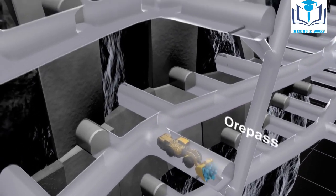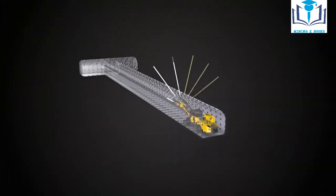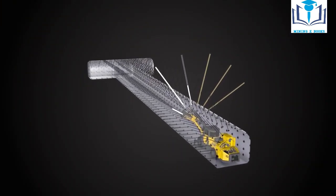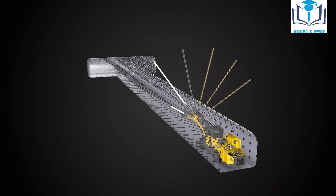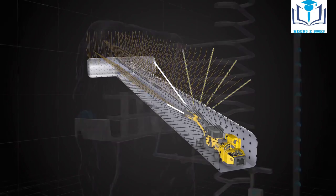Before it is time to excavate the secondary stopes, cable bolts are often installed above the stope. This will provide additional support to the rock mass, helping to prevent larger blocks from falling into the excavated stope.